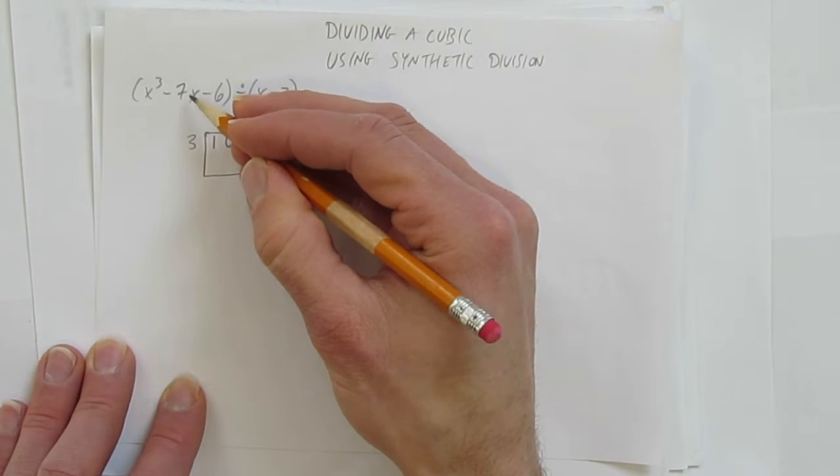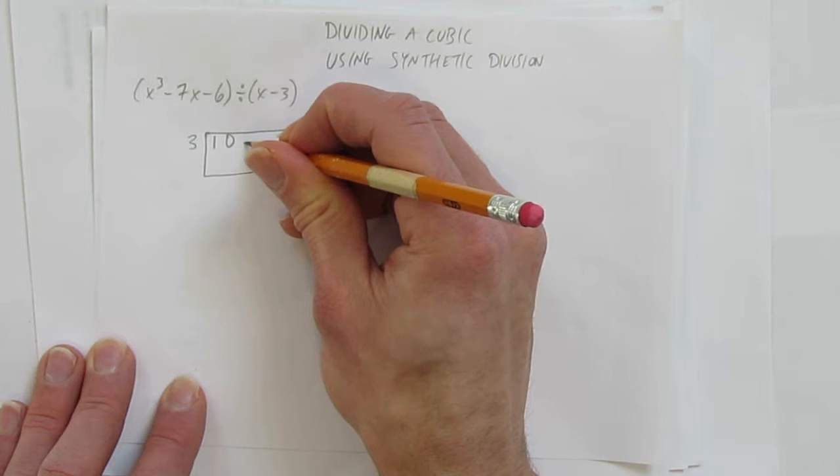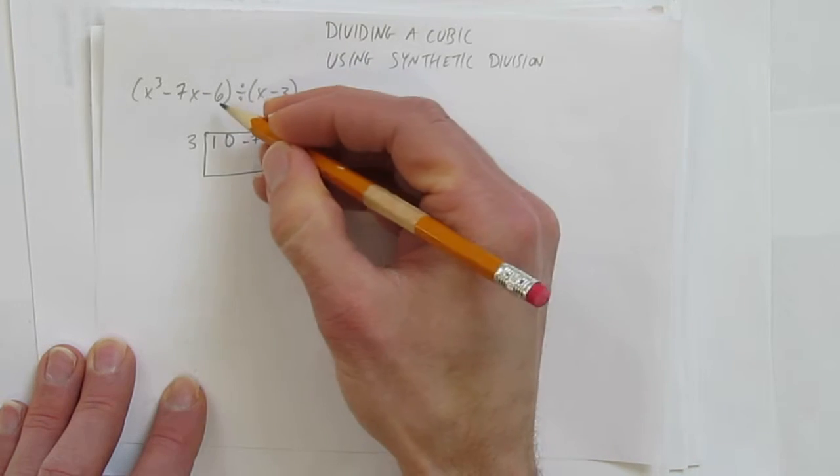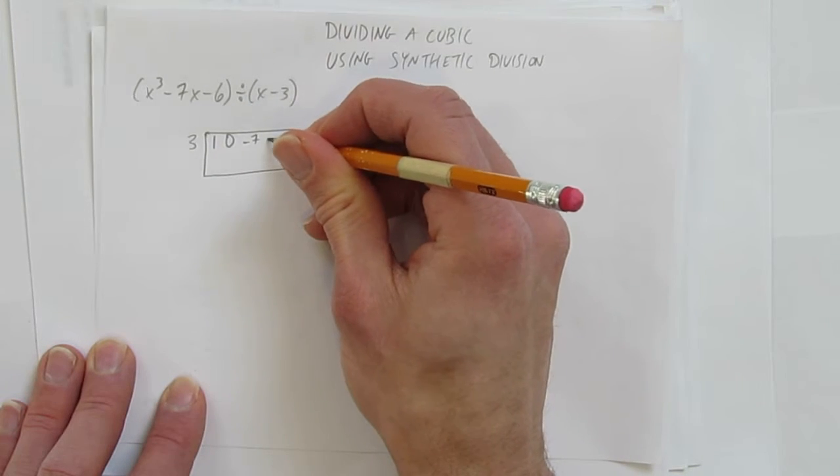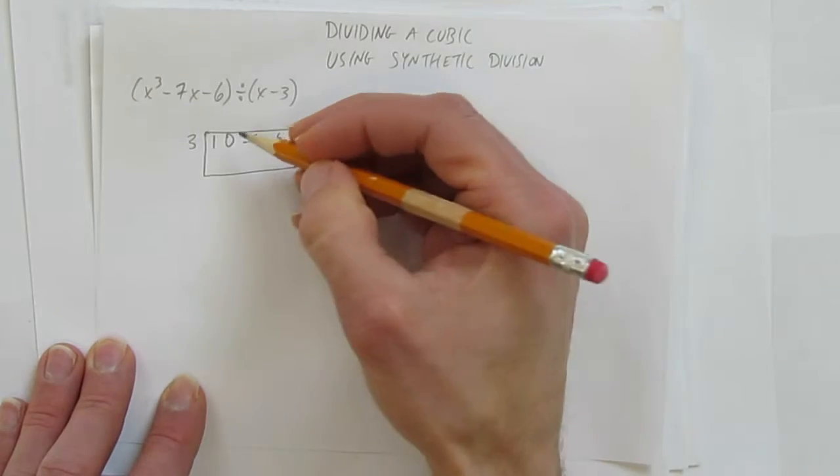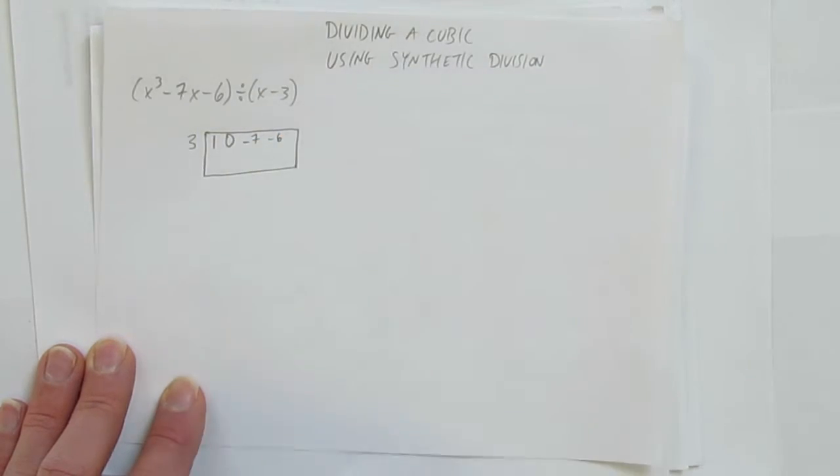What's the coefficient of the x's? Negative 7. And finally, the constant, negative 6. So we set up our coefficients, especially if there were any missing, we put a zero.